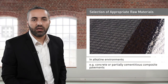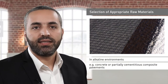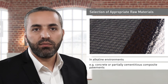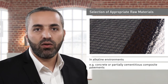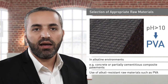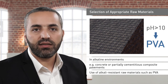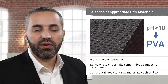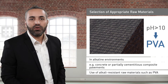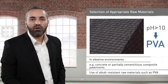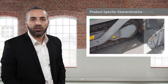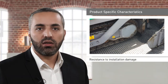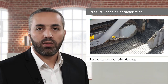The rehabilitation of concrete or partially cementitious composite pavements with a high pH value necessitates the use of alkali-resistant raw materials such as PVA. Apart from the choice of raw material, various other product-specific properties are crucial to optimising performance. A material's resistance to installation damage, for example, provides a clear indication as to how well it will actually perform in the installed condition.